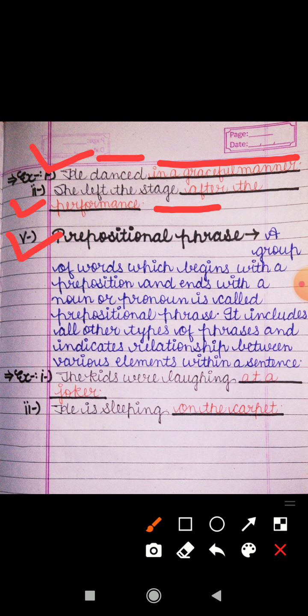Next is prepositional phrase, which is not given in the book. A group of words which begins with a preposition and ends with a noun or pronoun is called a prepositional phrase. It includes all other types of phrases — noun phrase, adjective phrase, and sometimes adverb phrase — and indicates the relationship between various elements within a sentence.